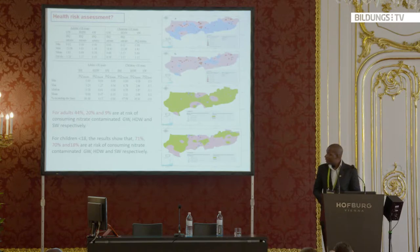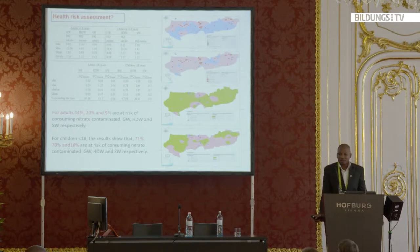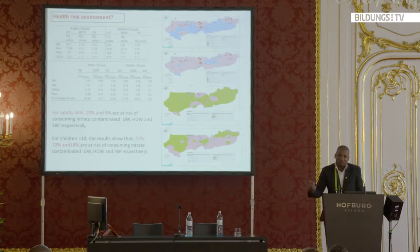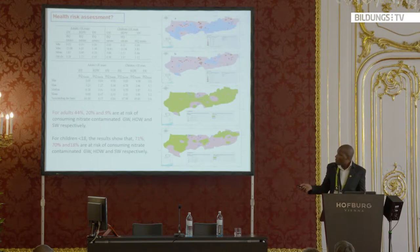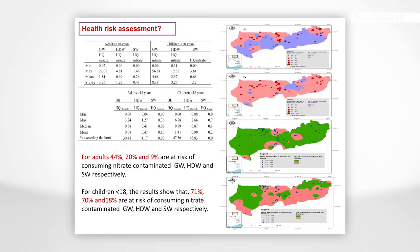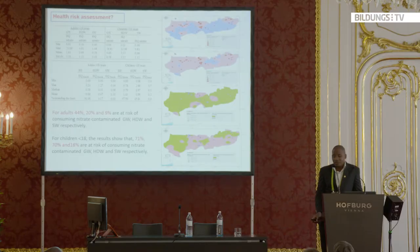Now that we know where the nitrate is coming from, what is its possible impact on human health? I categorized it into adults greater than 18 years and young children, using the US EPA guidelines formula for calculating risk. About 44%, 20%, and 9% of adults are at risk of consuming nitrate-contaminated groundwater. For children under 18, the risk increases from about 40% for borehole groundwater to 71%, 70%, and 18% for non-carcinogenic nitrate contamination risk across different water types.